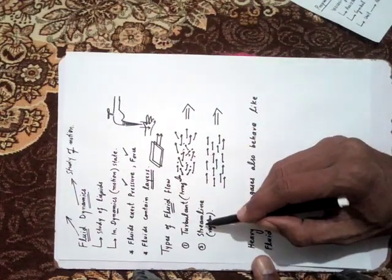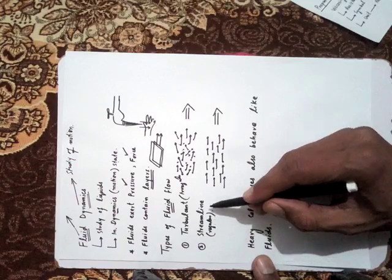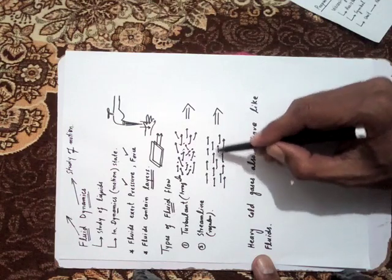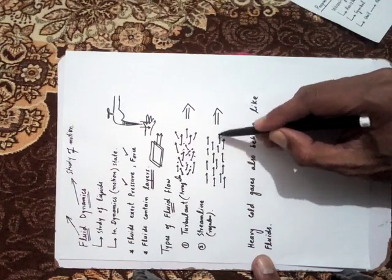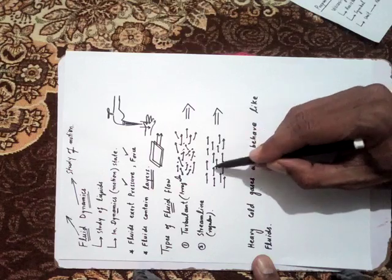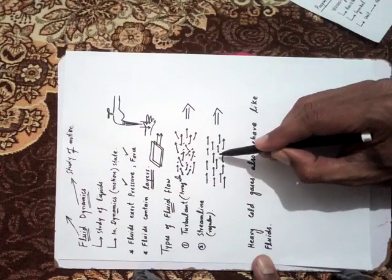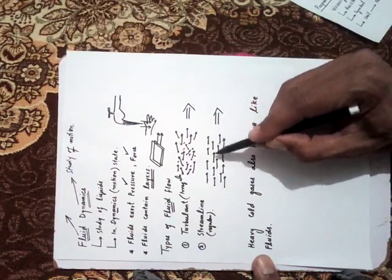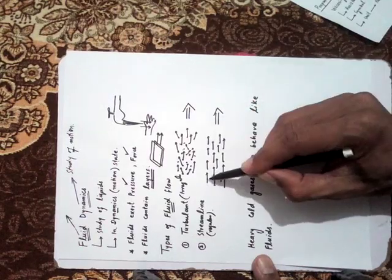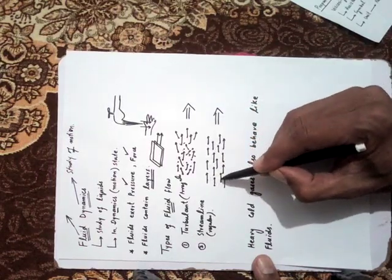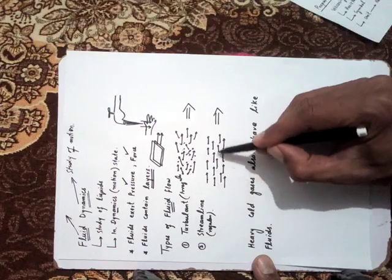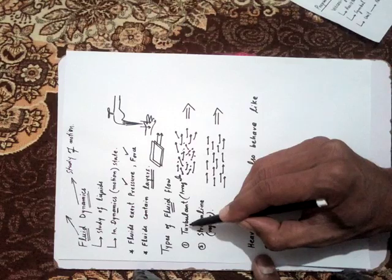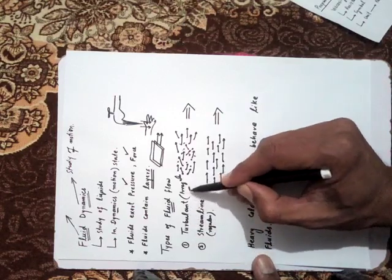The next type is streamlined flow. Streamlined flow is the type of fluid flow in which almost all molecules follow the same path and move parallel to each other. Every atom and molecule follows the same direction as the overall flow direction. This is called streamlined, or regular, flow. The previous type was turbulent, which was irregular flow.